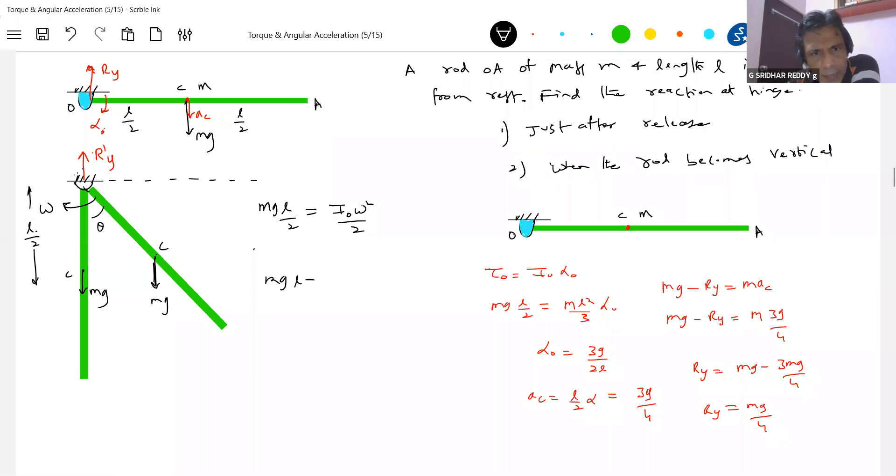So 2 get cancelled. So this will be M L square by 3 omega. So what is omega? 3G by L. So when the rod becomes vertical, this much of angular speed it will have.